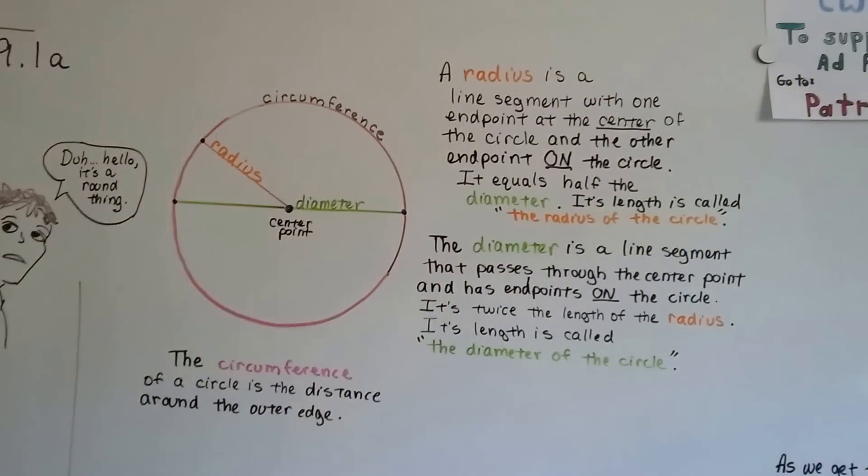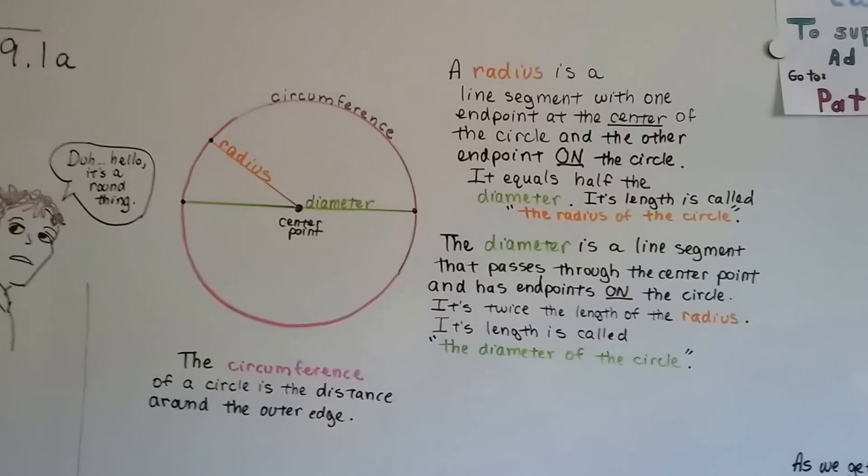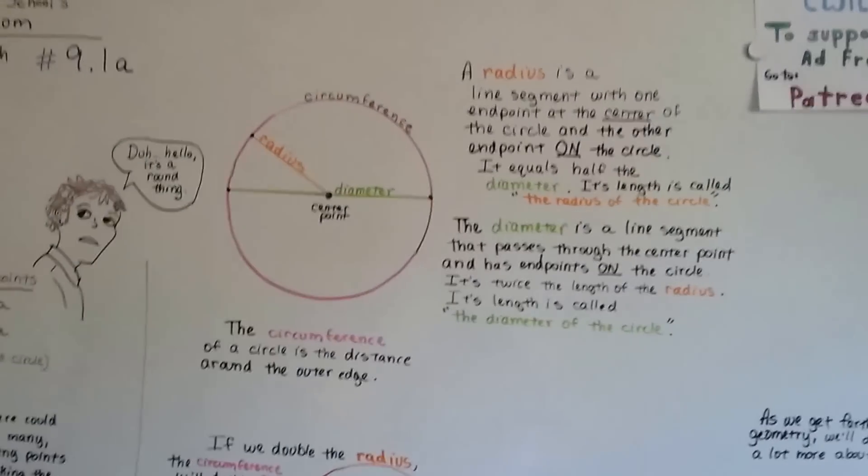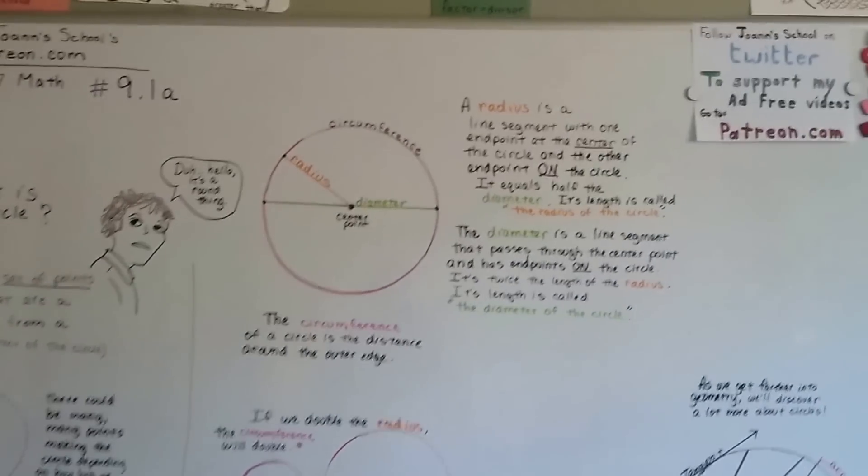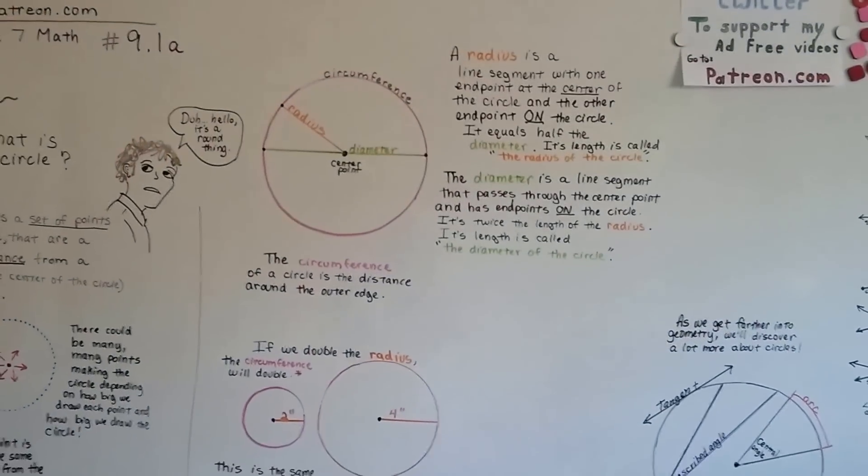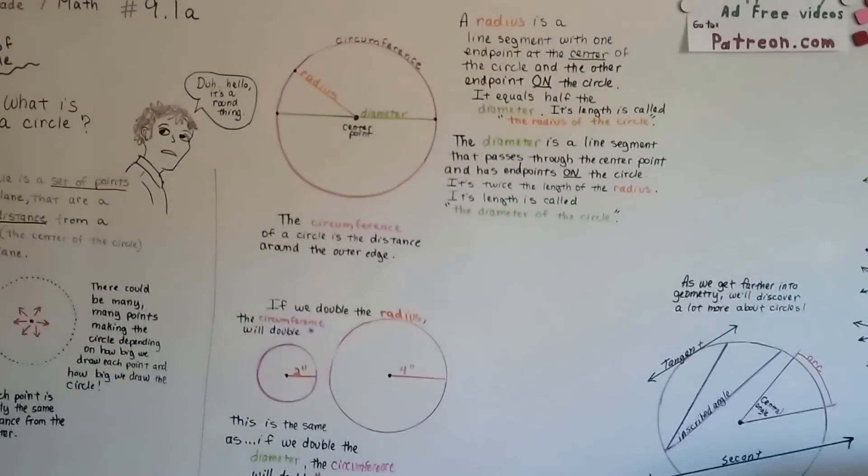You just need to worry about four: circumference, radius, diameter, and center point. I'm going to talk about the circumference in our next video. I'm going to talk about how to find it and how to use it to help us. I'll see you next video. Bye.